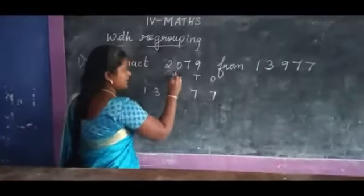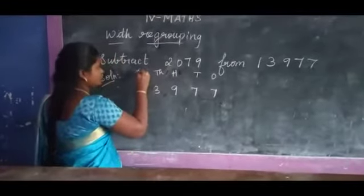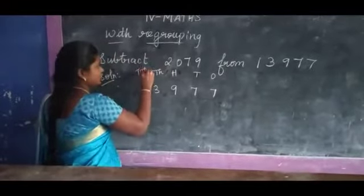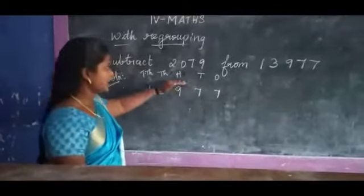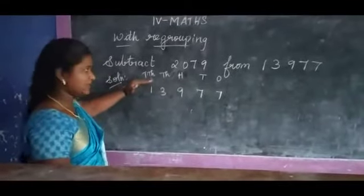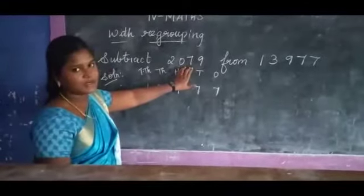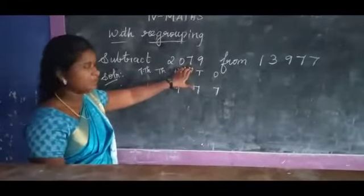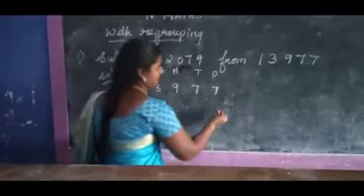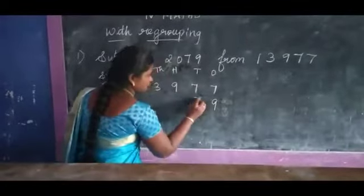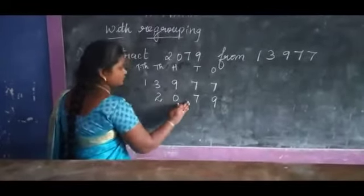Place values: ones, tens, hundreds, thousands, ten-thousands. Next you have to write the second number from the right side. So: 9, 7, 0, then 2.